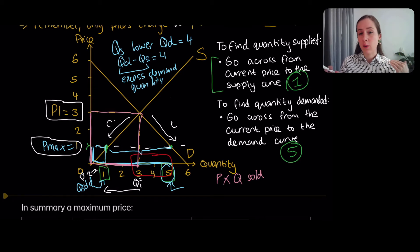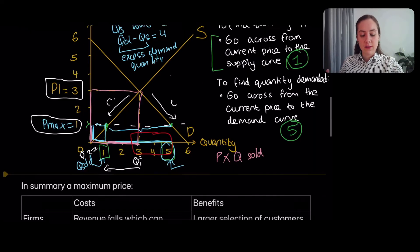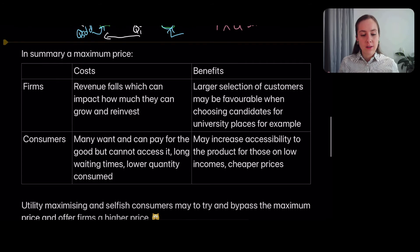But now that the good is priced at one, yes, there's more competition to get that one unit, but they have an improved chance at getting the good because now at least they can afford it. Before they weren't willing or able to buy it. And now that it's cheaper, they could. So those are the costs and the benefits of a maximum price.